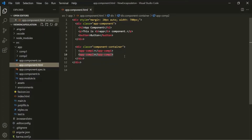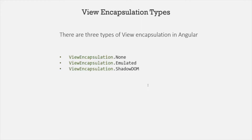How does Angular actually achieve this view encapsulation? In Angular, there are three types of view encapsulation: None, Emulated, and Shadow DOM. By default, Angular uses Emulated view encapsulation. In the emulated type, Angular adds some unique HTML attributes to the component CSS style and also to the HTML elements in order to achieve view encapsulation.